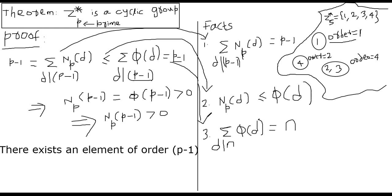So what do we have now? We have p minus 1 on the left-hand side and p minus 1 on the right-hand side. We also know each element of this summation series is less than or equal to the corresponding element of the other series. That means the corresponding elements must be equal — otherwise, you will not get equality on both sides. So we have p minus 1 on both sides.